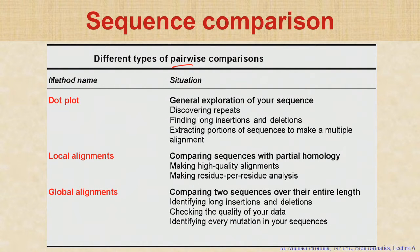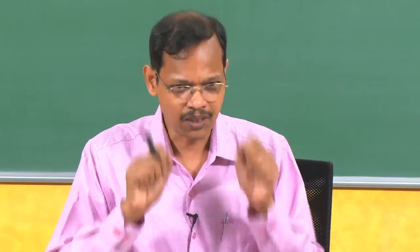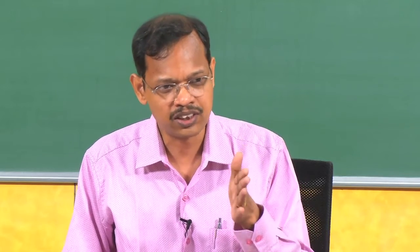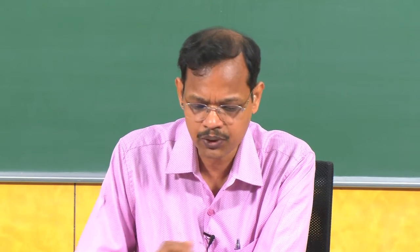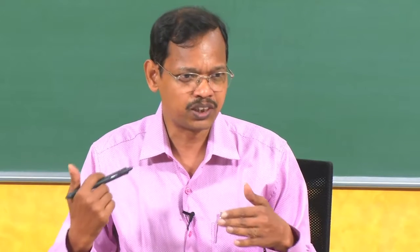There are various methods available to compare two sequences — this is called pairwise comparison. The simplest one is the dot plot, which compares two sequences and places a dot if the sequences are the same. From this plot, we can see whether the same residue is at the same position, or if there is a shift in sequence 1 or sequence 2. The dot plot can also reveal repeats, long insertions or deletions, and regions that can be aligned between two sequences.